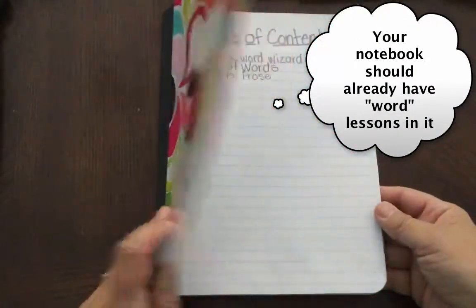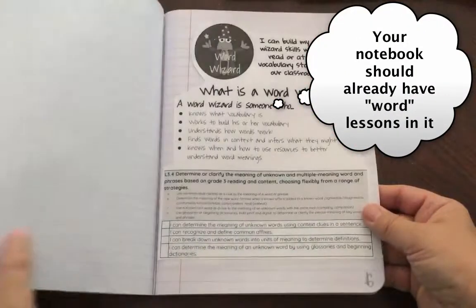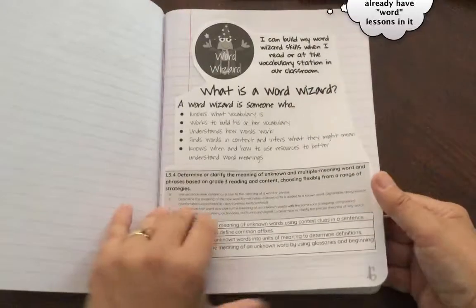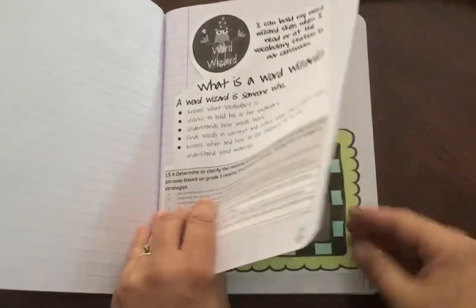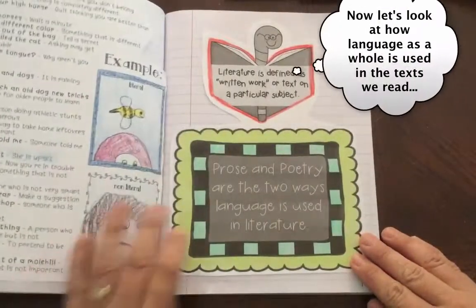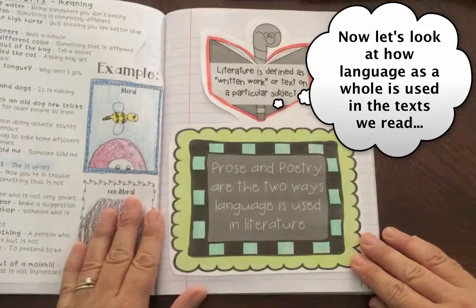In our comprehension notebooks we've already taken a look at being a word wizard and looking at the magic of words. Now we're going to focus on the way language is used in the text that we read.